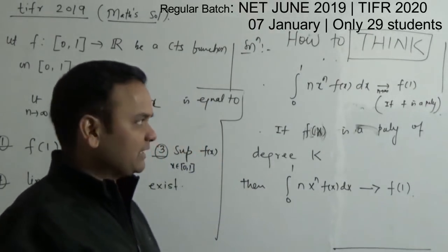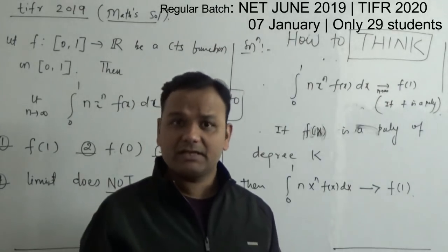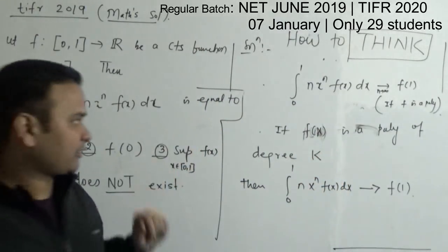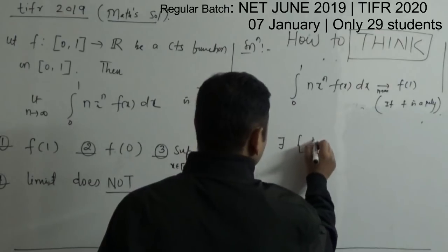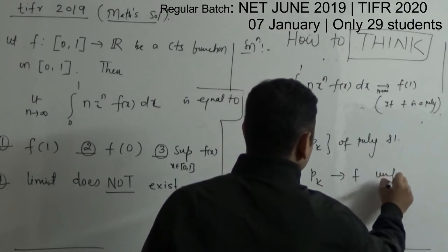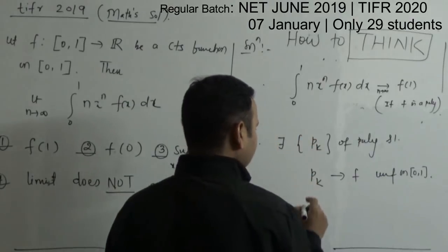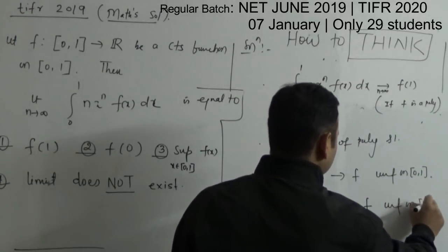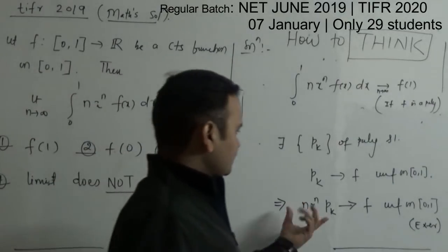Now, how can we use the polynomial case for a general continuous function? The Weierstrass theorem tells us that every continuous function on a closed interval [a,b] is a uniform limit of polynomials. Once you have a uniform limit, you can exchange the integration and the limit. So the next step is: there exists a sequence p_k of polynomials such that p_k converges to f uniformly on [0,1]. This uniform convergence also means that n times x^n times p_k converges uniformly to n times x^n times f.